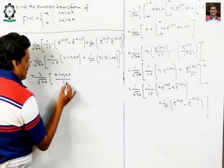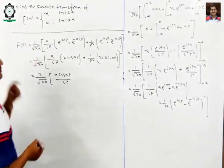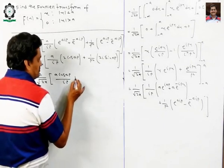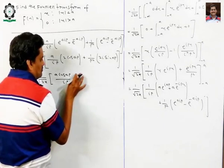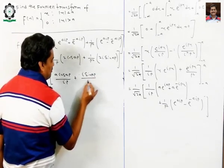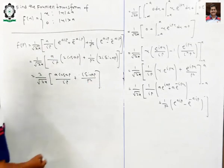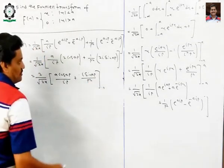So we have: a divided by ip times 2 cos(ap), and this is minus 2i sin(ap) over p². This is the final result, dear friends.